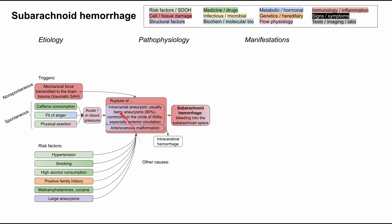It's not always intracranial aneurysms and arteriovenous malformations that cause the bleed; there are other less common causes. These include angioma and other neoplasms in the brain, which have structural differences in their vasculature that predispose them to bleeding. Cortical thrombosis can cause bleeding by changing blood flow — creating backup behind the clot or negative pressure in front of it — both of which can rupture vessels. Infections can also cause vascular problems leading to bleeding.